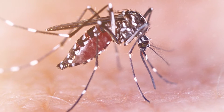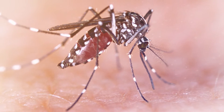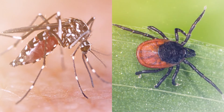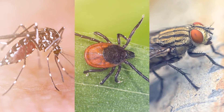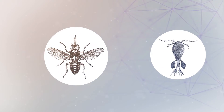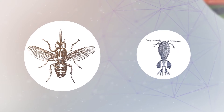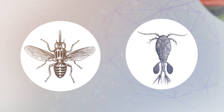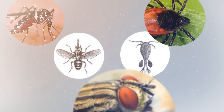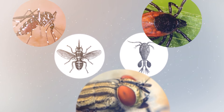Vector-borne diseases are transmitted typically by the bite of an infected arthropod. The arthropod could be something very familiar to us, such as a mosquito, tick, or fly, or it might be a less familiar species, such as an African tsetse fly or copepod. These arthropods that carry and transmit disease are known as vectors.